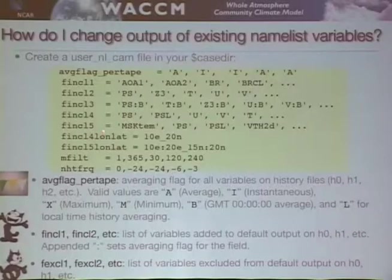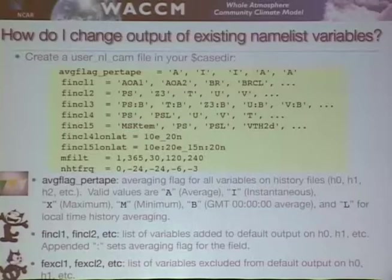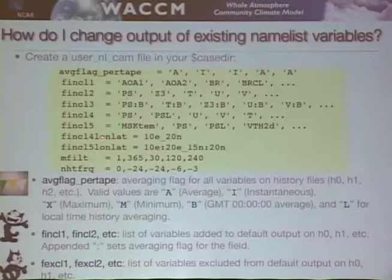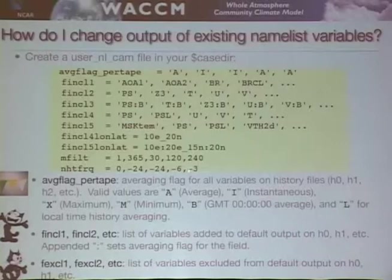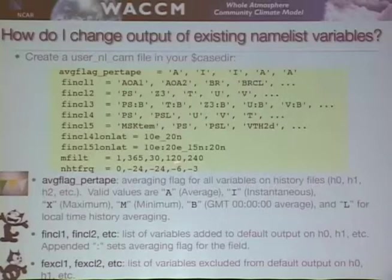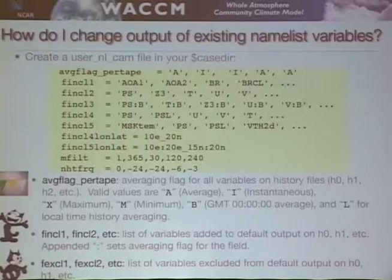There's a new feature — which I think is great for the ground-based observing community — where you can change the output to not put it out globally, but at a particular location, specified by longitude and latitude. The history file associated with fincl4 will put out variables only at that location. You can put multiple locations in a file, asking for different frequencies — say every six hours at one location or every three hours for two locations — and have different variable lists for each. This is a really nice feature especially for the CEDAR community.